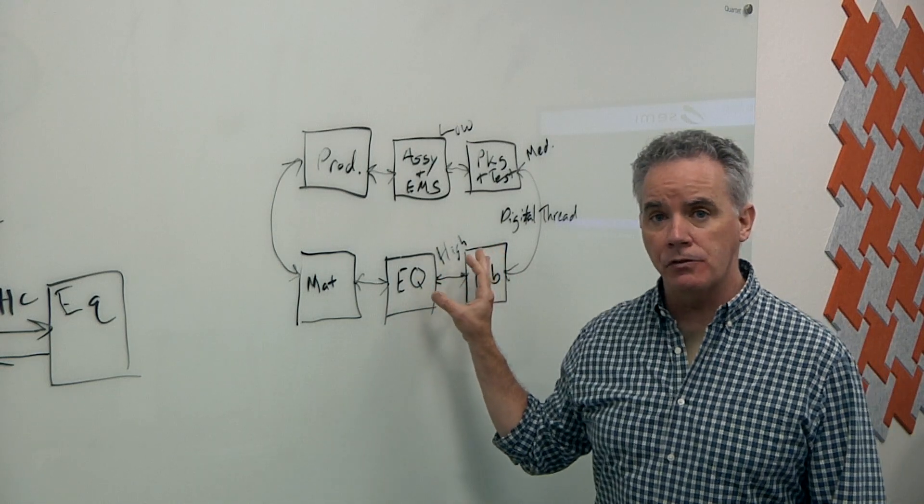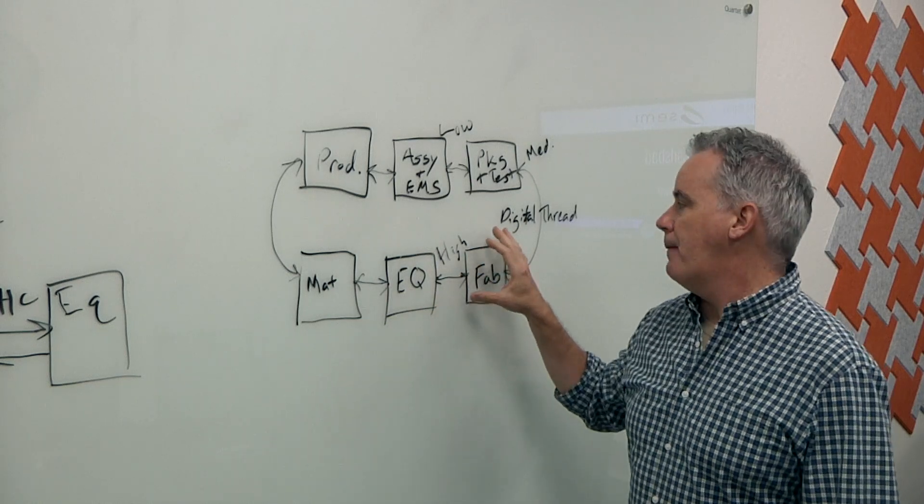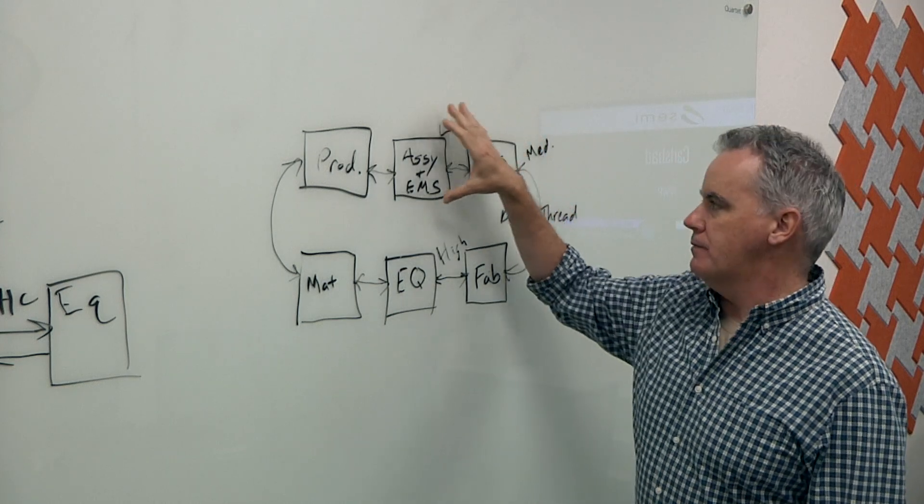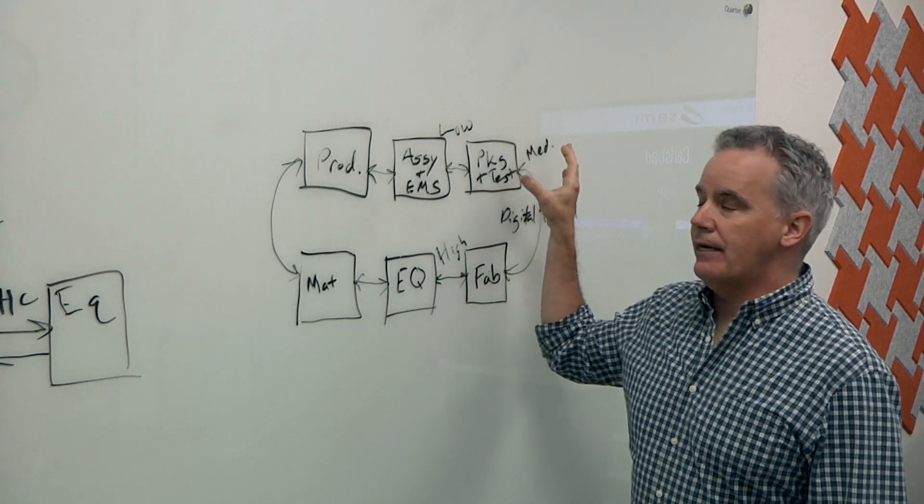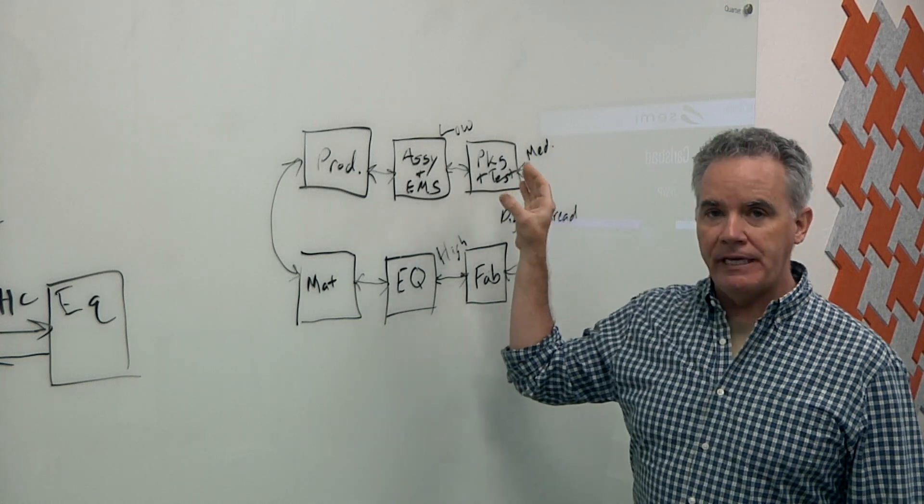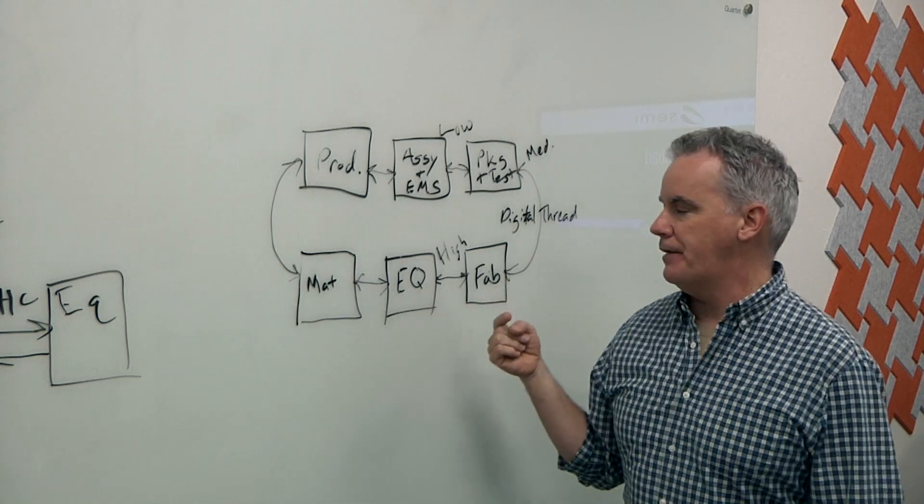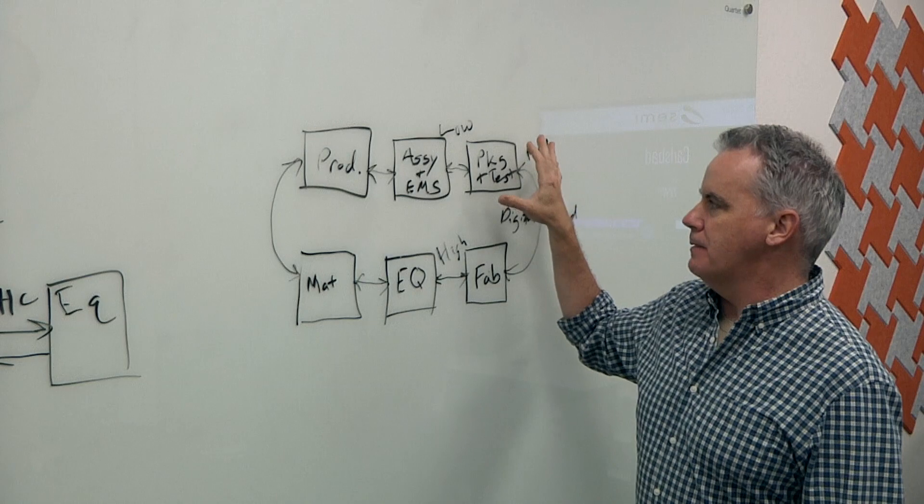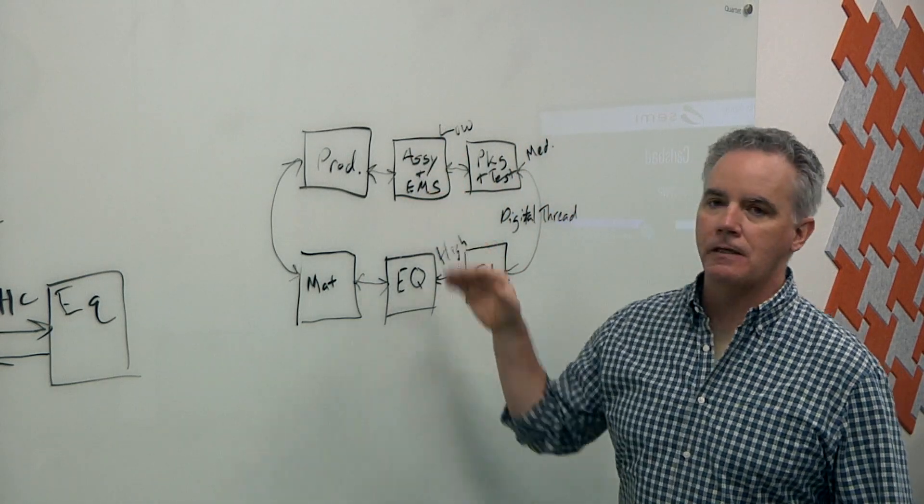Often this is a point to point solution or just within the fab. But if we go to packaging test or even further downstream into the assembly and EMS, the amount of data as well as the capabilities in terms of taking advantage of the information and control is more at a medium level in packaging and test and to a lower level within the assembly and EMS world.